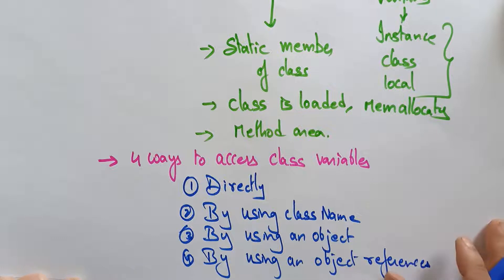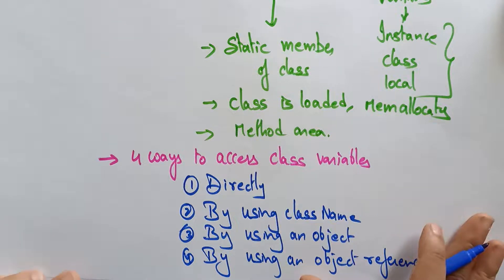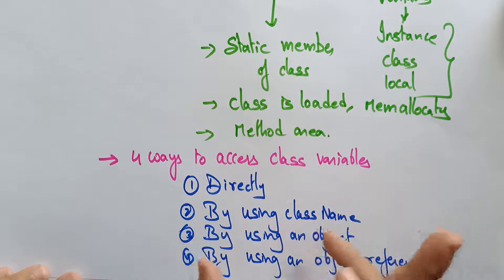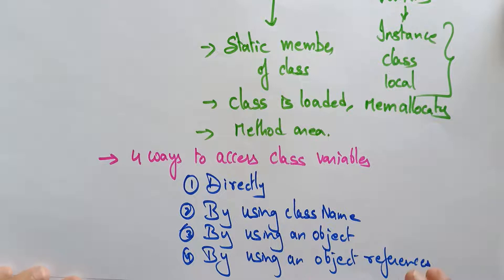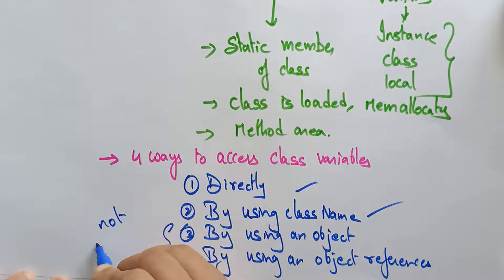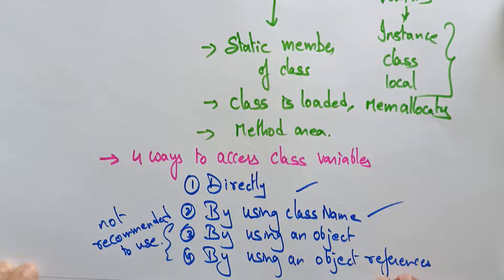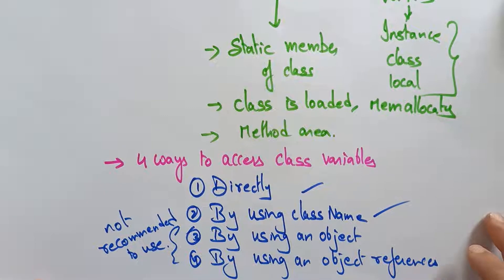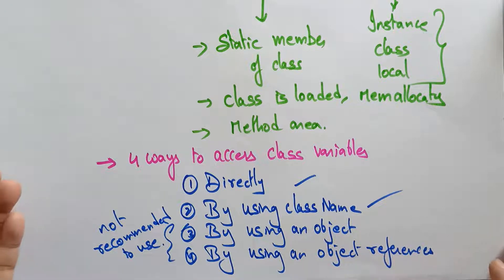So these are the four different ways to access the class variable. Class memory is allocated when it is loaded. In Java, we prefer to use the first and second methods. The third and fourth — using an object or object reference — are not recommended because they occupy more memory space.